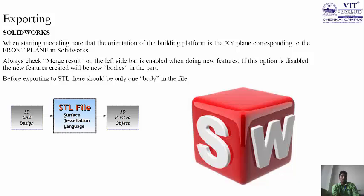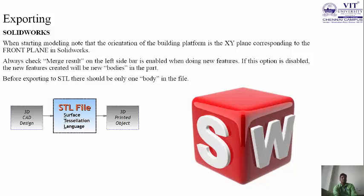Now I am going to discuss exporting: how to export a CAD design into an STL file, and then how this STL file is carried over to the 3D printed object. When starting to model, note that the orientation of the building platform is the XY plane, corresponding to the front plane in SolidWorks. In SolidWorks this has to be considered because the XY plane is a universal reference for importing the STL file after conversion to the 3D printed object. Always check that Merge Results on the left sidebar is enabled when creating new features. If this option is disabled, the new feature created will be a new body in the part. Before exporting to STL there should be only one body in the file. So the 3 main steps are: 3D CAD design, then convert to STL (Surface Tessellation Language), then transform to the 3D printed object.